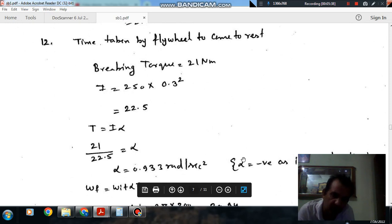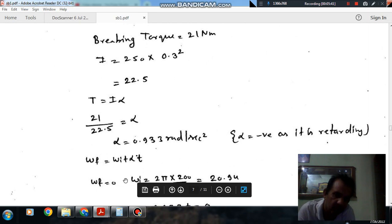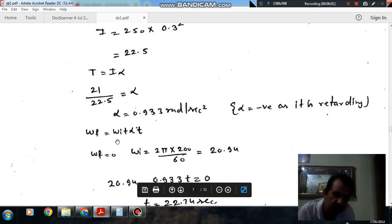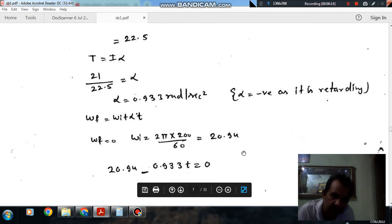Putting T equal to I times alpha, T we have calculated as 21 Nm. From mass and radius of gyration, I is 22.5. So alpha comes out as 0.93 rad/s². This alpha will be negative because the drum is retarding. Using the relationship omega f equals omega i plus alpha t, taking omega f as zero because the drum is coming to rest.